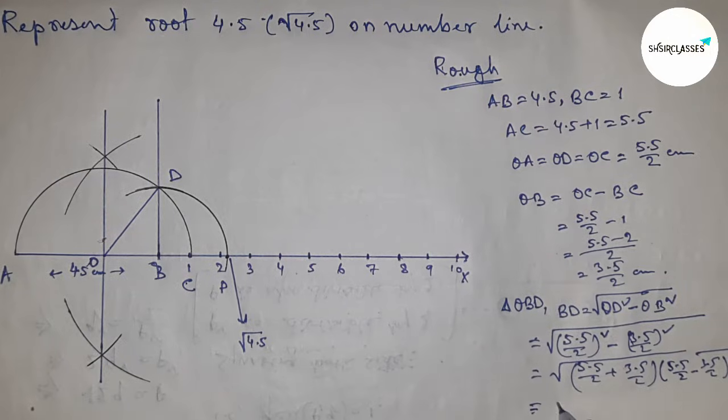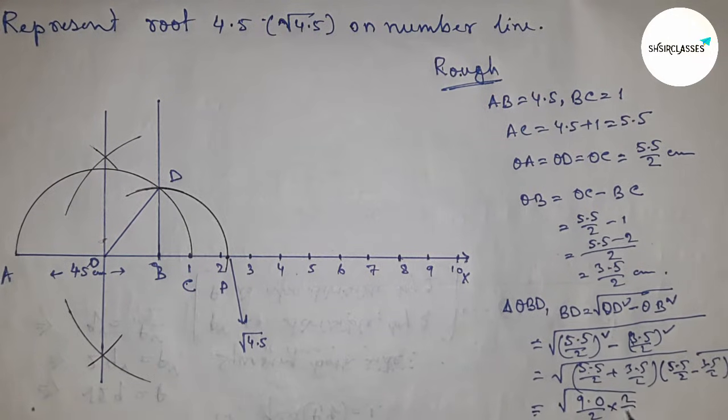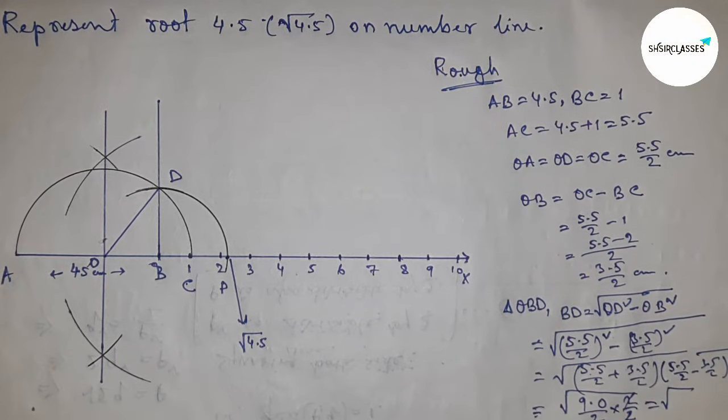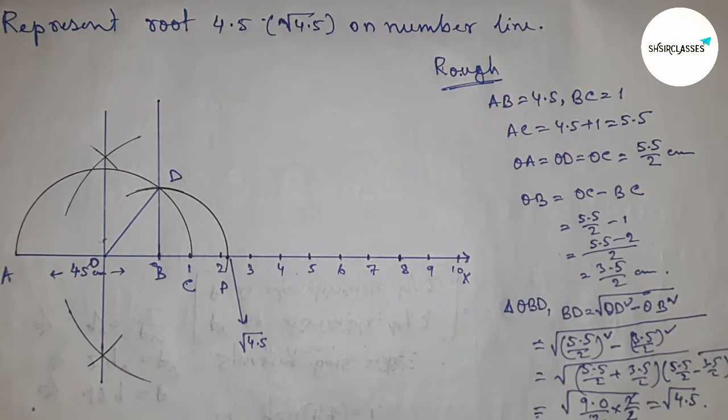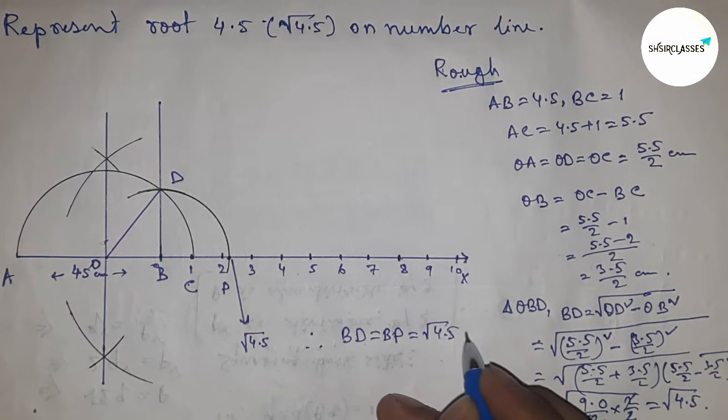From first, this is 9 by 2 into 2 by 2, so this is 4.5. Therefore, BD equals BP equals root 4.5 centimeters.